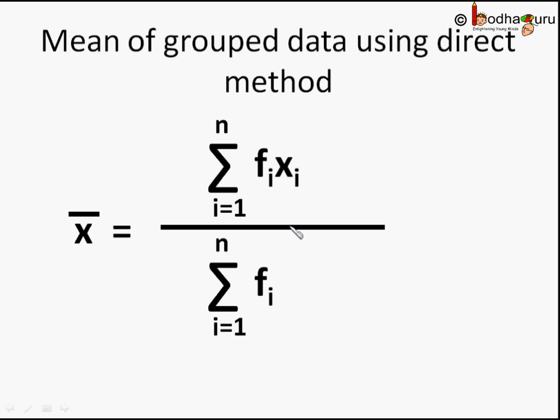And then we divide sum of fixi by sum of fi. This gives us the mean or x̄. There are other methods for finding mean of grouped data which require lesser calculation. We will see them in the next set of videos. Till then, bye bye.